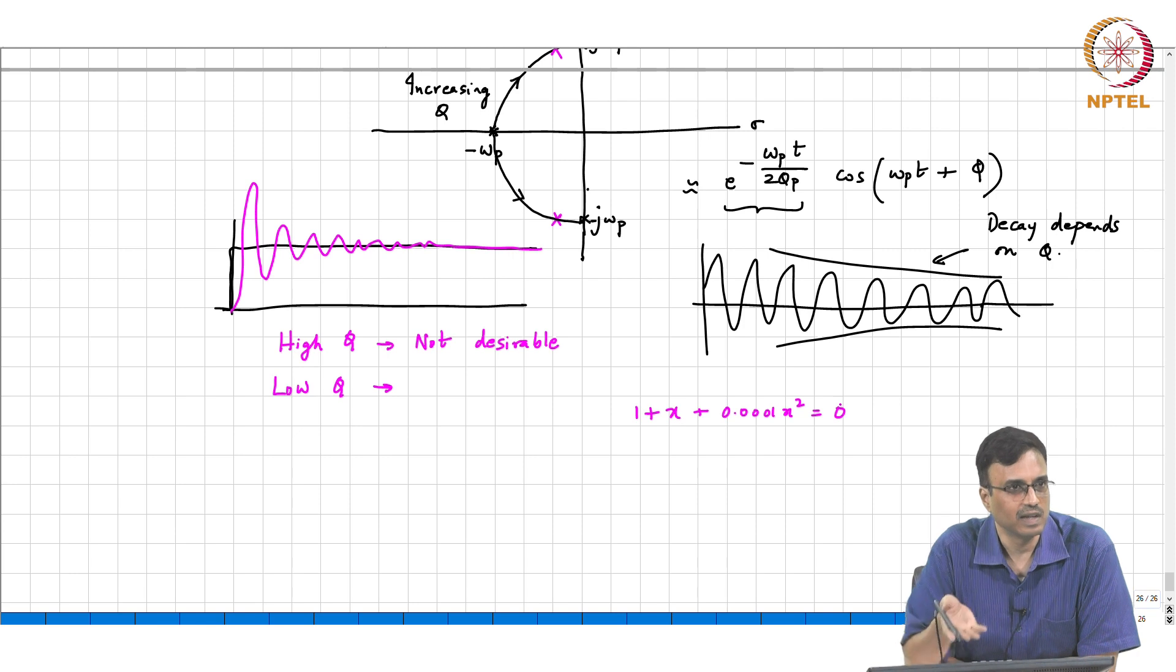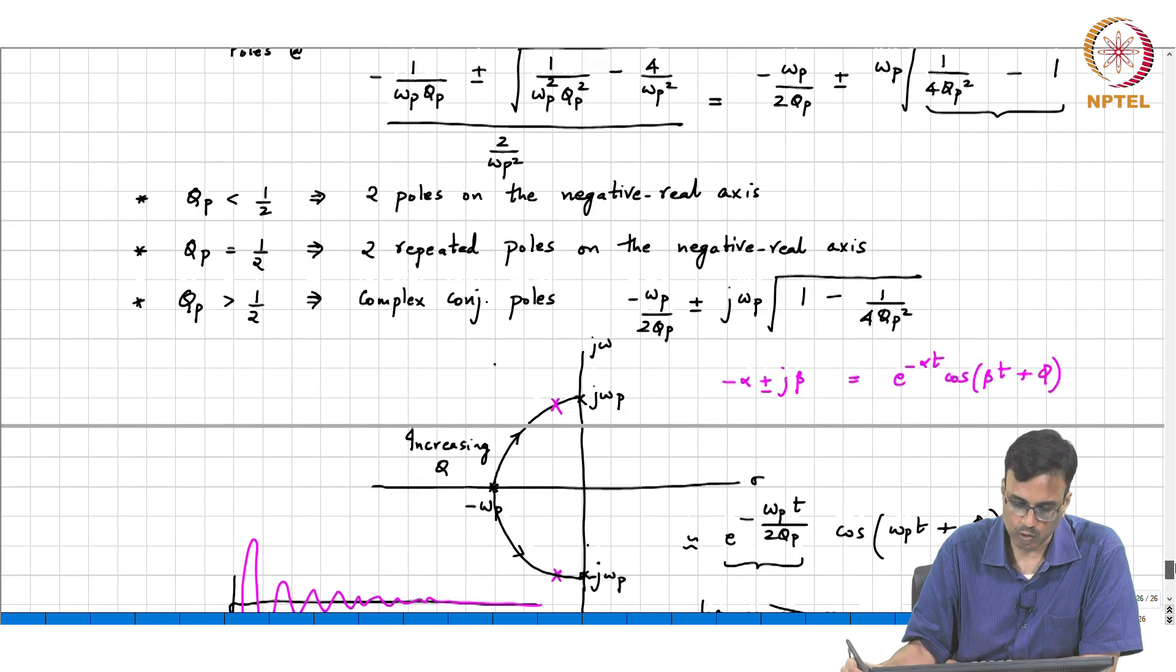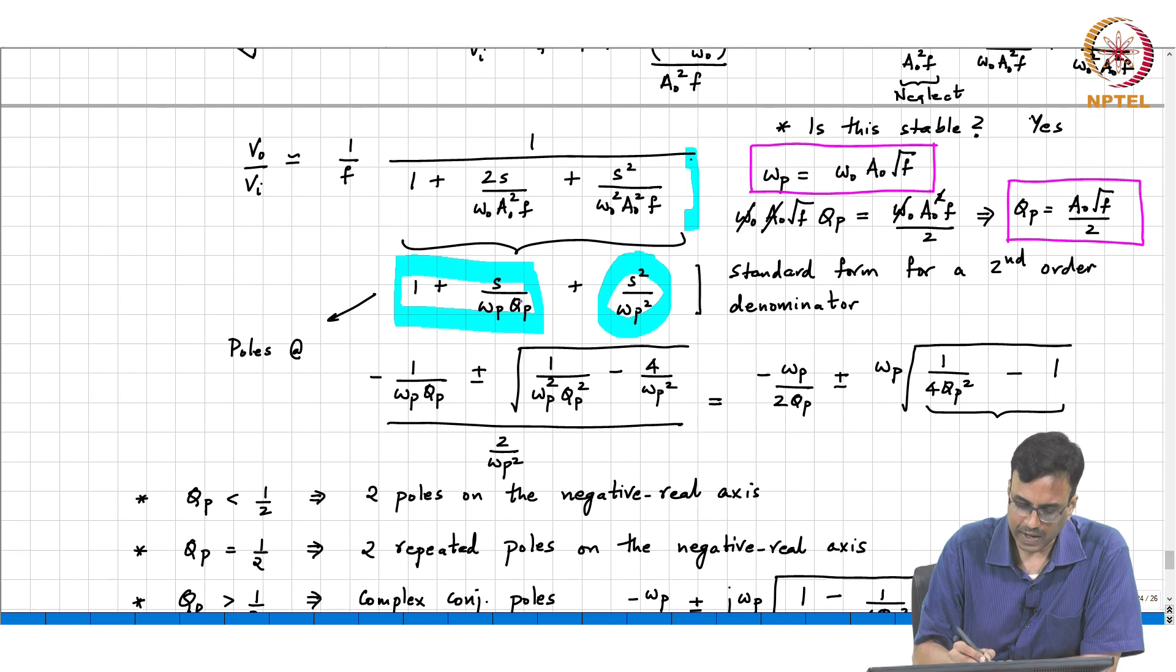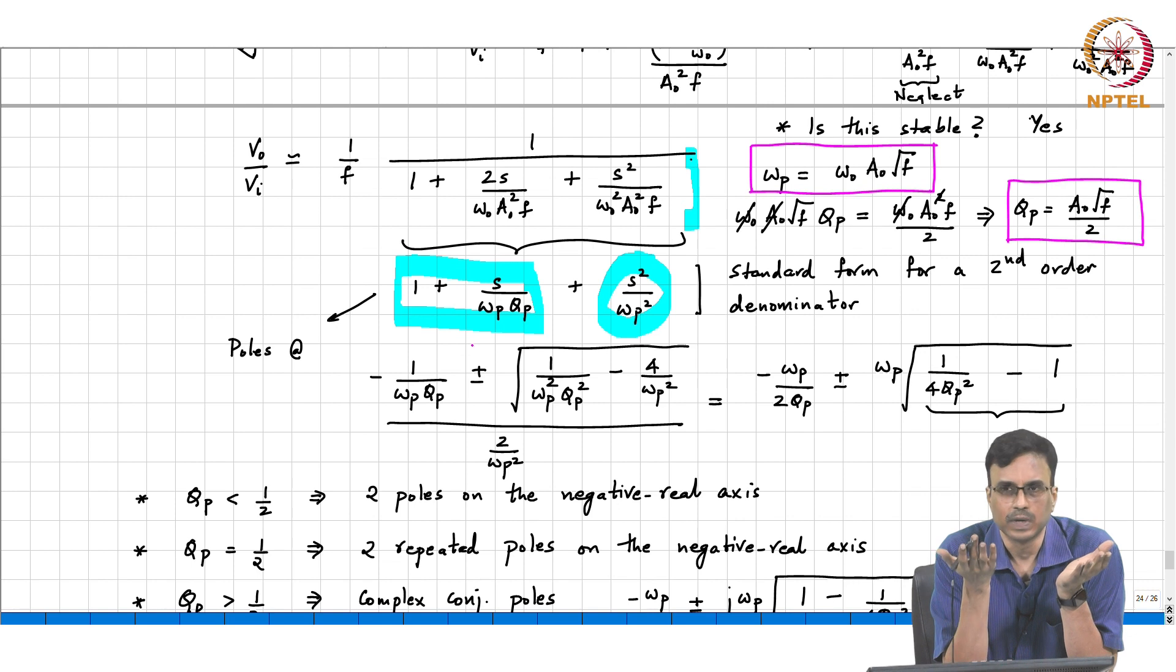Theoretically 2 roots, but the dominant root basically is going to be minus 1. So in the limit, if you try to make the quality factor Q too low, what is happening? It looks like a first order system with a bandwidth omega p q p.